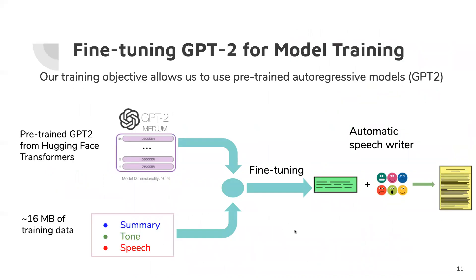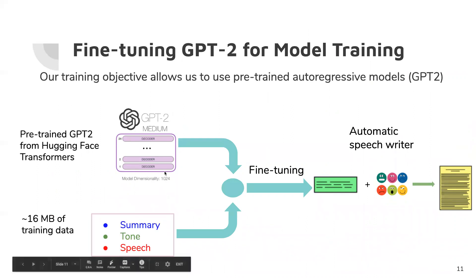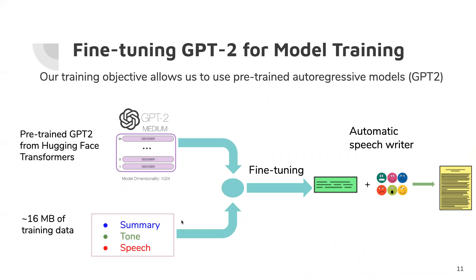This slide presents an overview of our pipeline for fine-tuning GPT-2. We utilize the Hugging Face Transformers library to download a pre-trained GPT-2 model and fine-tune it on our clean dataset. This produces a model capable of generating speeches when given a summary and tone. We can then draft a summary and tone, and use top-p sampling and top-k sampling to generate the speech.